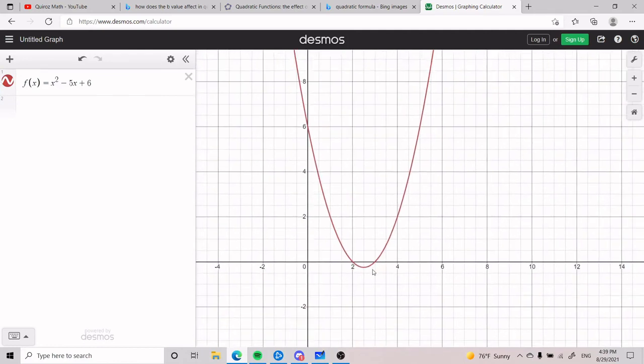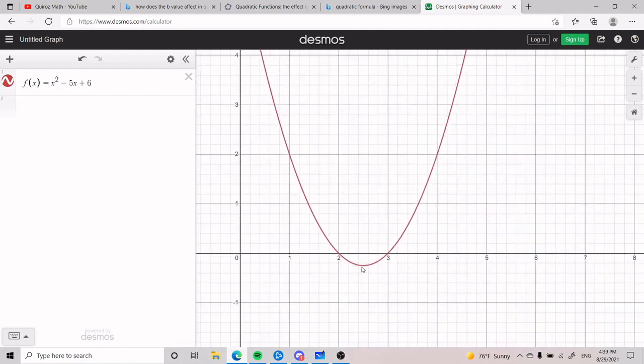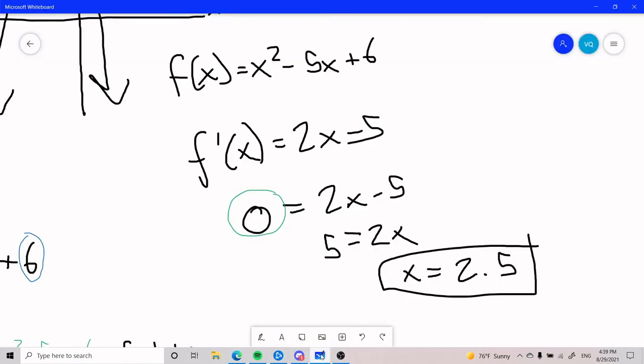If we look at the graph that we have here through decimals of our trusty function, we can see that its minimum or vertex is at the point (2.5, -0.25). And so the 2.5 is the x value that we were looking for, which is what we got exactly here. And so that is what tangents and also derivatives are useful for in a quadratic function.